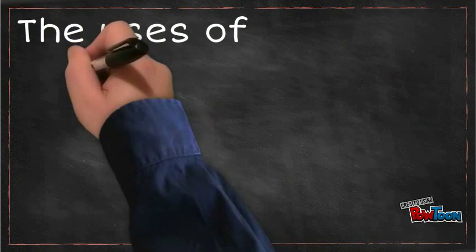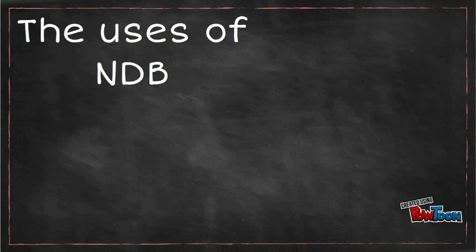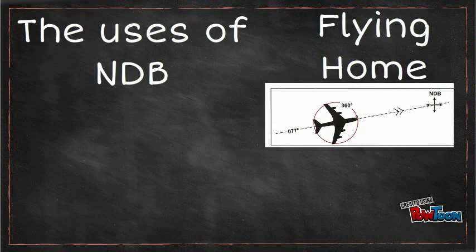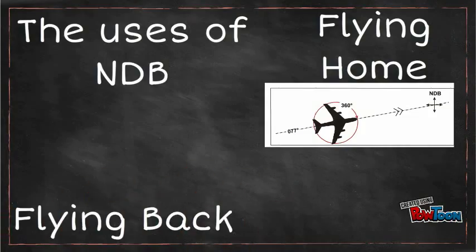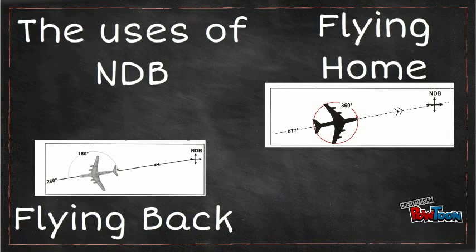The last point is uses of NDB. Flying from NDB means the aircraft is flying from the NDB station to the landing. Flying to NDB means the aircraft is flying toward the NDB station.